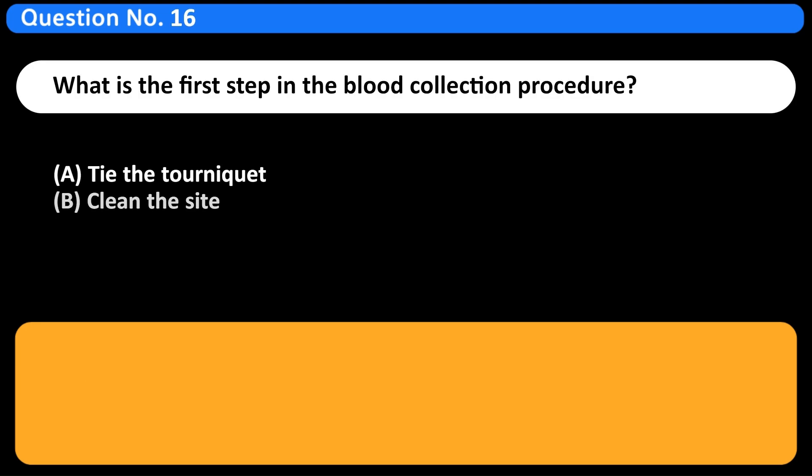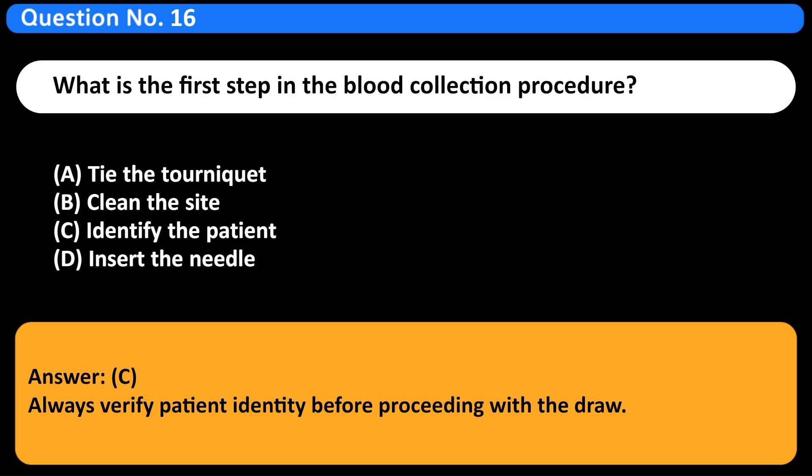What is the first step in the blood collection procedure? A. Tie the tourniquet. B. Clean the site. C. Identify the patient. D. Insert the needle. Answer C. Always verify patient identity before proceeding with the draw.